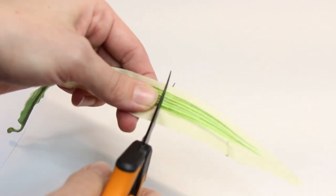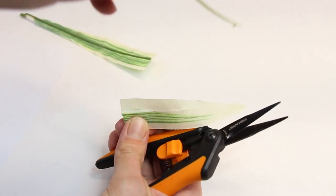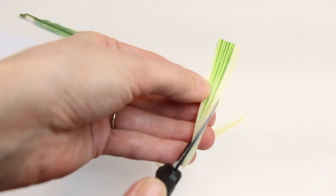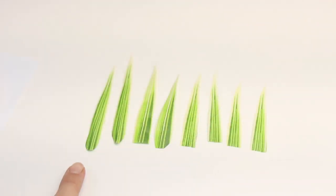For the next plant, cut off the end of one of the long leaves. Cut around the edges making it into a spike.